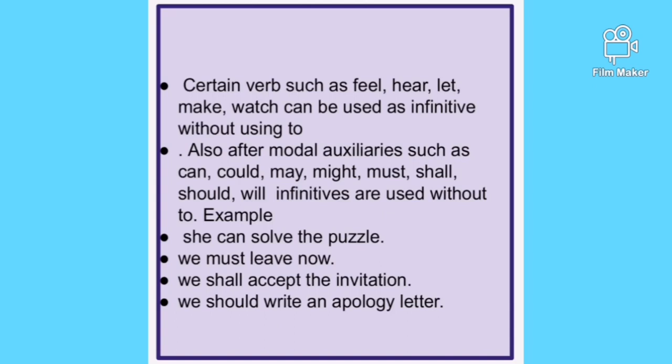There are sentences where infinitives are used without 'to' — these are known as zero infinitives or bare infinitives. They are used after certain verbs of perception or permission when used as the direct object, and after modal auxiliary verbs. Examples: 'She can solve the puzzle,' 'She must leave,' 'We shall accept the invitation,' 'We should write an apology letter.' After modal auxiliaries, infinitives are used without the preposition 'to.'